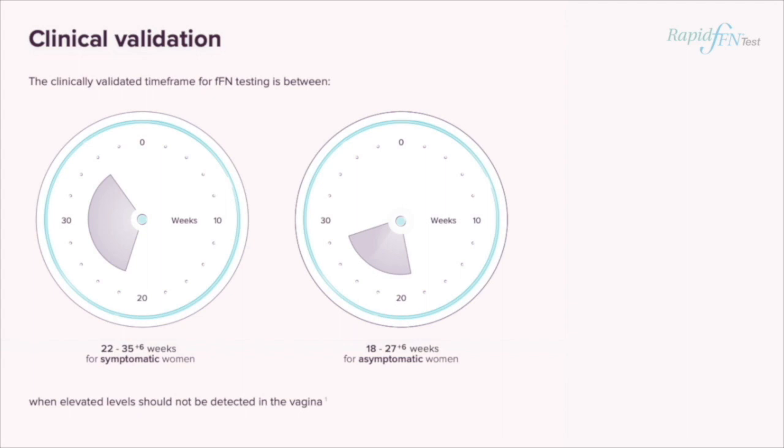In the UK, fetal fibronectin is valid for use within two groups of patients: between 22 and 35 plus 6 weeks for symptomatic women, and between 18 and 27 plus 6 weeks for asymptomatic women with risk factors for preterm birth.